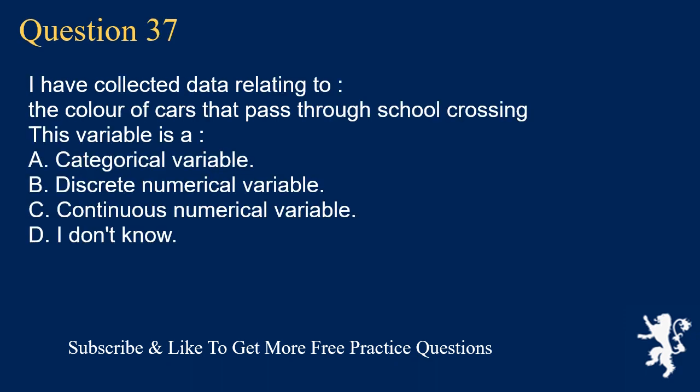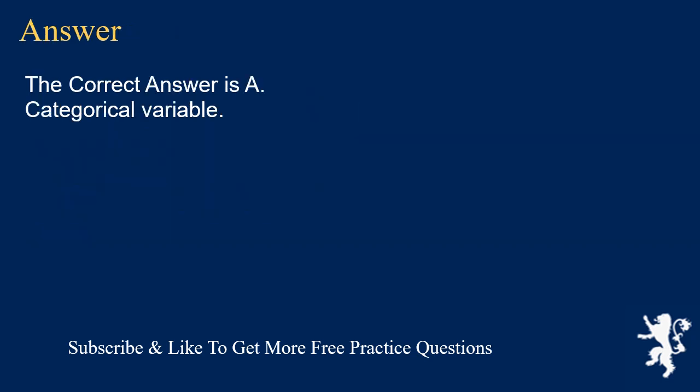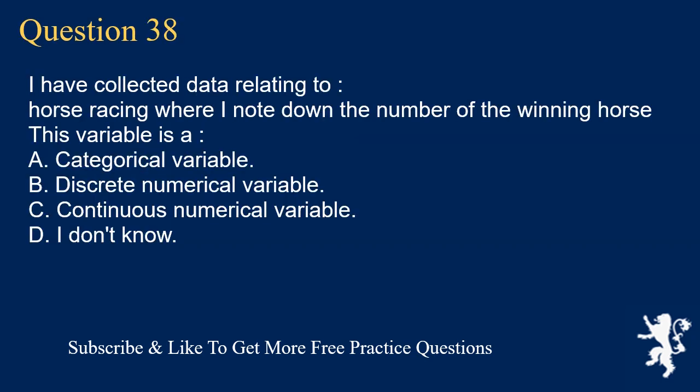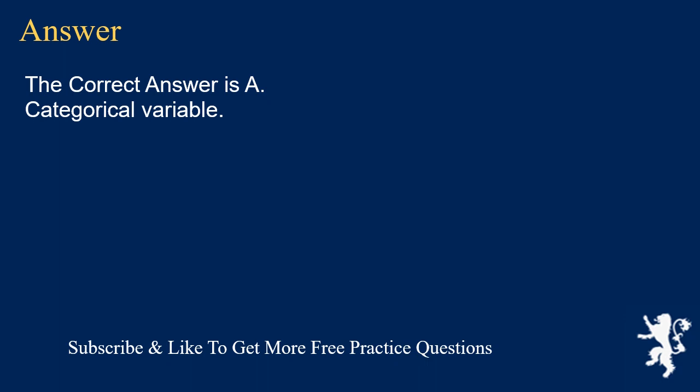Question 37: I have collected data relating to horse racing where I note down the number of the winning horse. This variable is A. categorical variable, B. discrete numerical variable, D. I don't know. The correct answer is A, categorical variable.